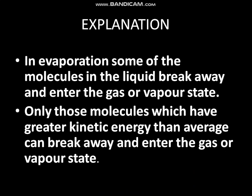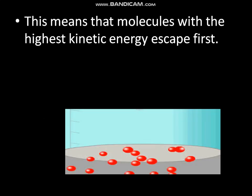In evaporation, some of the molecules in the liquid break away and enter the gas or vapor state. The molecules which have higher kinetic energy than the average kinetic energy can break away and enter the gas or vapor state. Only those molecules which have greater kinetic energy can escape from the surface of the liquid in the form of vapors. This means that molecules with the highest kinetic energy will escape first. You can see in the figure some molecules shown in red color — these are the molecules escaping from the surface, as they have the highest kinetic energy.